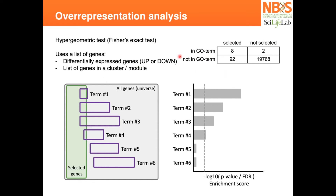Visually, imagine all the genes in your universe in this big square, and the selected genes are those considered differentially expressed by a p-value cut-off and a log-fold change cut-off. If term 1 has most of its genes within my selected set, it will have a higher significance — I'm plotting the minus log 10 of the p-value. Another term with the same number enriched but many others not will have a lower p-value. Term 3 has even more genes not enriched, giving an even lower p-value. So both the size of the term and the percentage of its genes in my selected list affect how enriched it is.